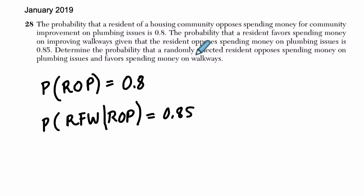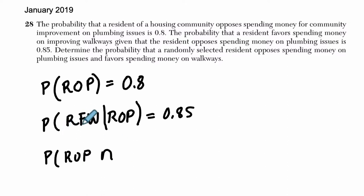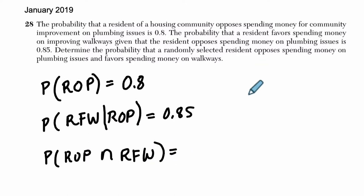Determine the probability that a randomly selected resident opposes spending money on plumbing issues. So we want to find what's the probability that you are a resident that opposes spending money on plumbing issues and favors spending money on walkways — that's my R-F-W, resident favors walkways. So we got through the problem and kept up with all of the context here.